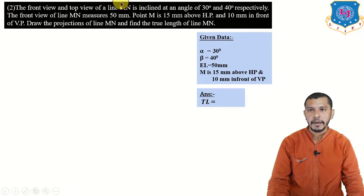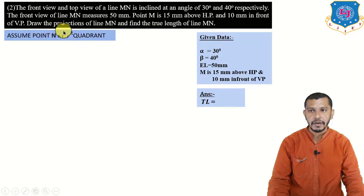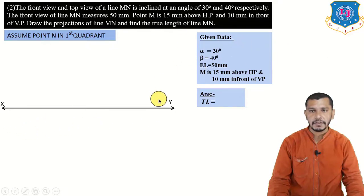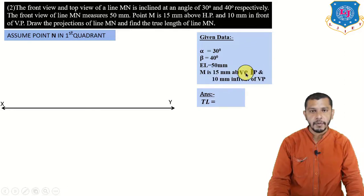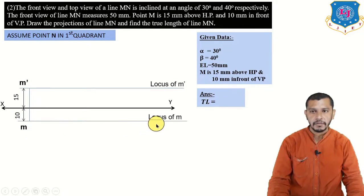The quadrant of point N is not given, so we assume point N in the first quadrant, same as M. So N will be above HP and in front of VP. Draw the XY reference line, then mark the elevation and plan of point M. M is 15 mm above HP, so 15 mm above XY we get M-dash and the locus of M-dash. M is 10 mm in front of VP, so 10 mm below XY we get the plan of point M and the locus of M. Now we have alpha, beta, and elevation length.